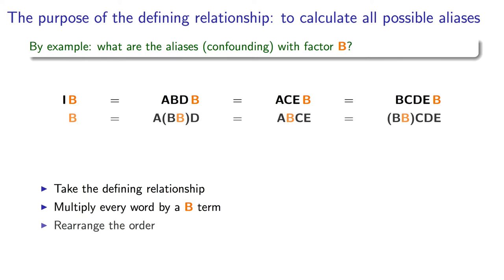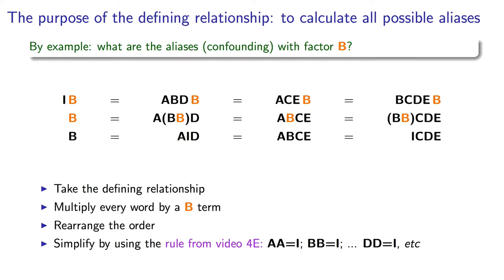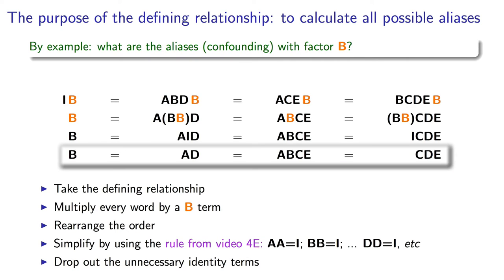IB equals ABD times B equals ACE times B equals BCDE times B. We can simplify that a bit. Remember the rule that any two letters can be dropped away when they are the same, because they're equal to the identity, or a column of ones.